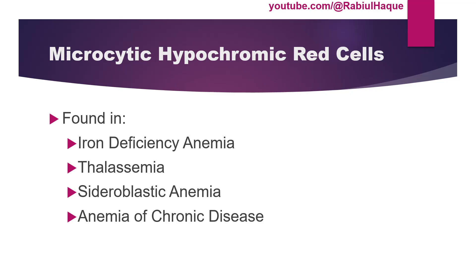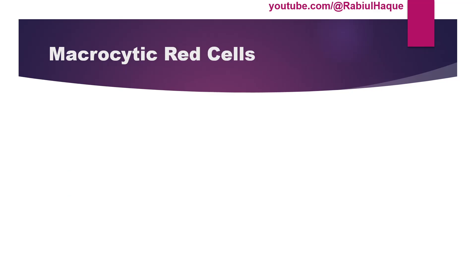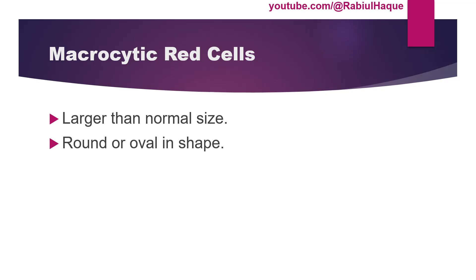Red blood cells can also become larger, and that term is known as macrocytic. Here the red blood cells are larger than their normal size and they may be round or oval.